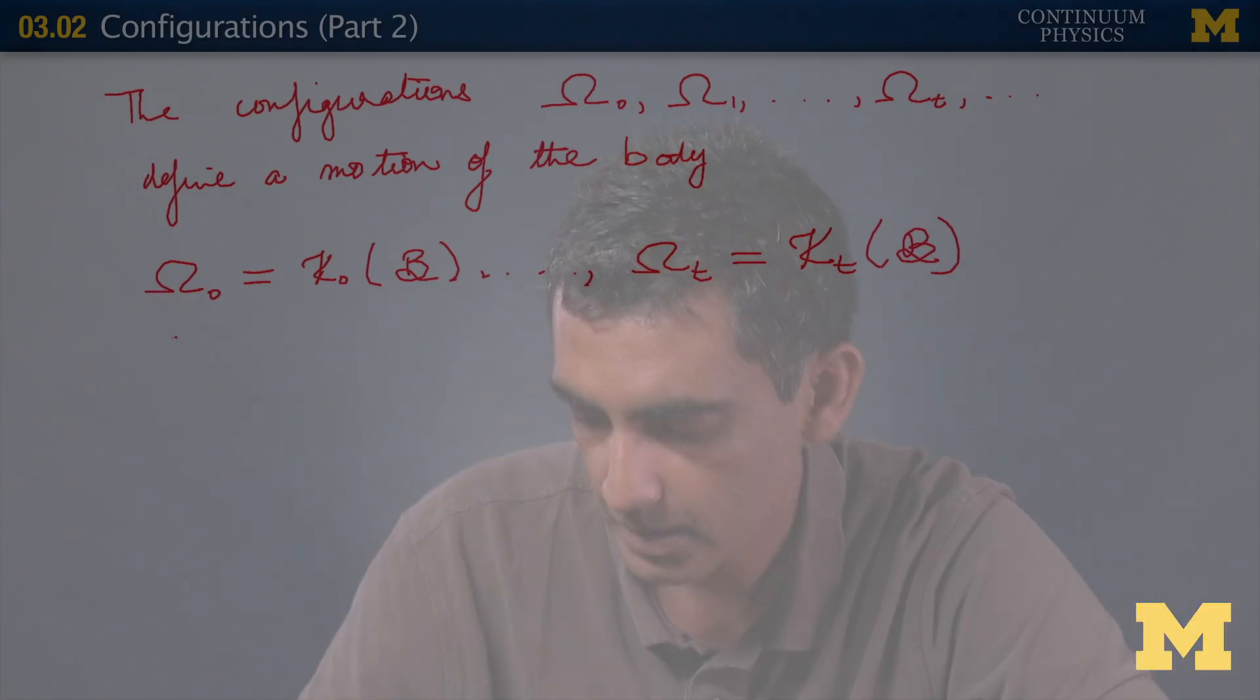So we think of the body as occupying different configurations at different times t. And clearly, this defines a motion because the body is literally moving in the sense of time through these different configurations. So out here t parameterizes the motion. Think of it as time.